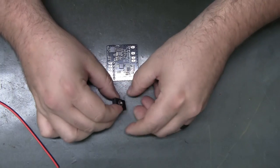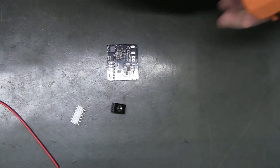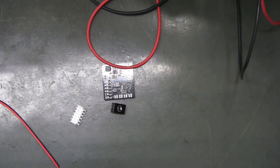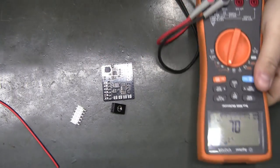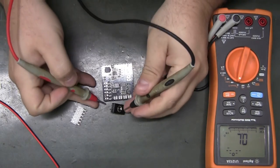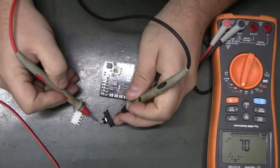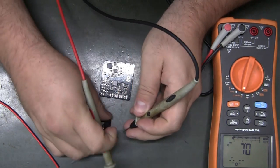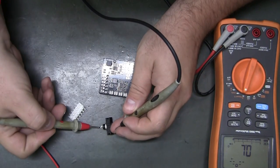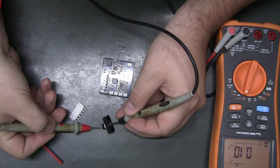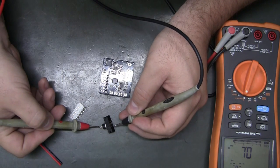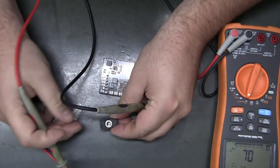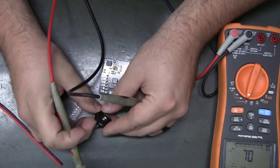So if you take your multimeter and double check it, you'll see the long one here—the long solder tab on the back—is the outside. And the short is the pin, which would be your center.